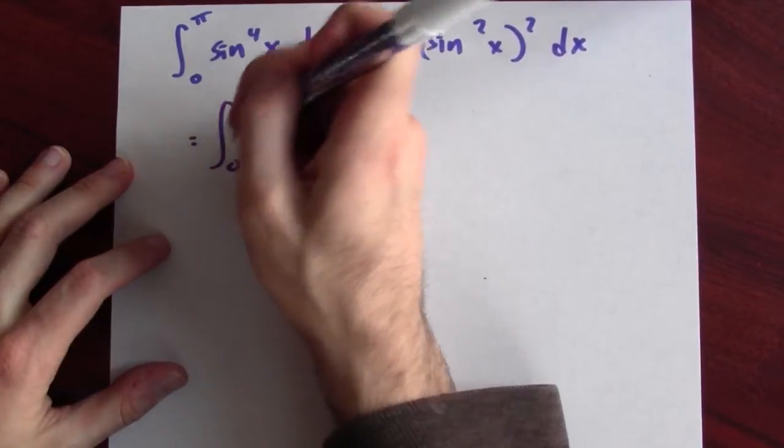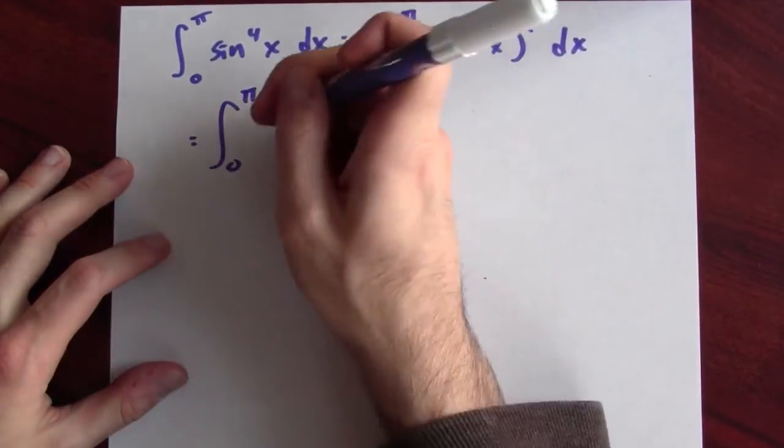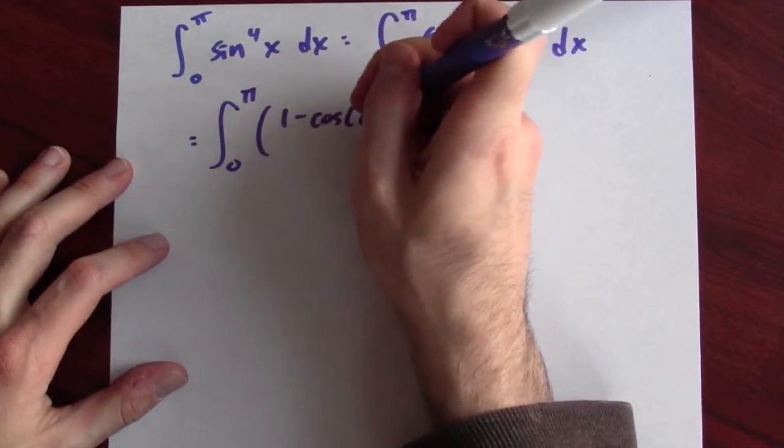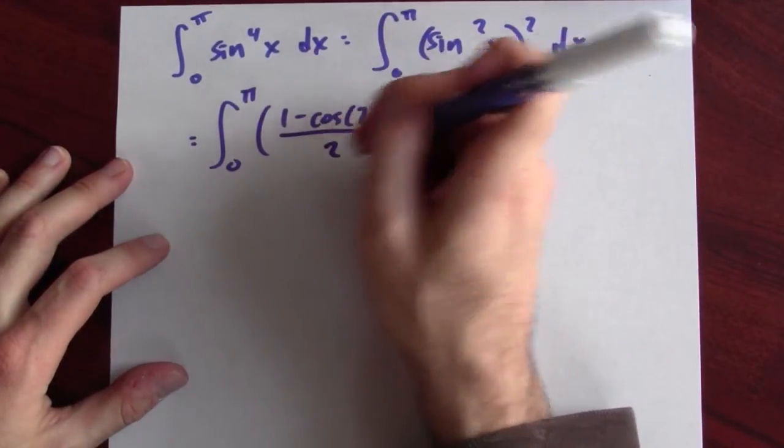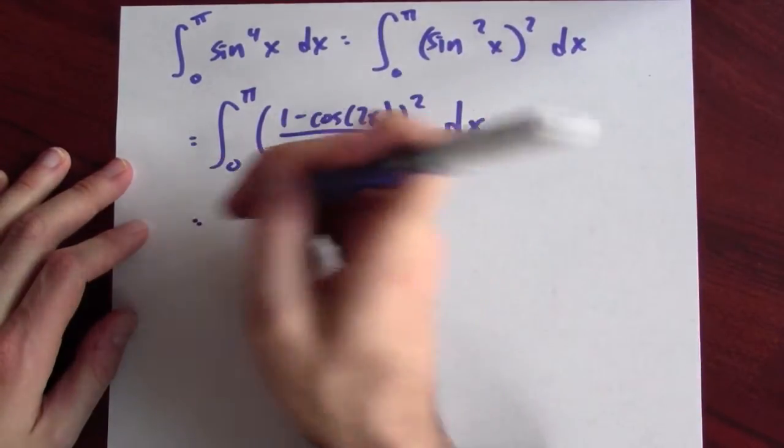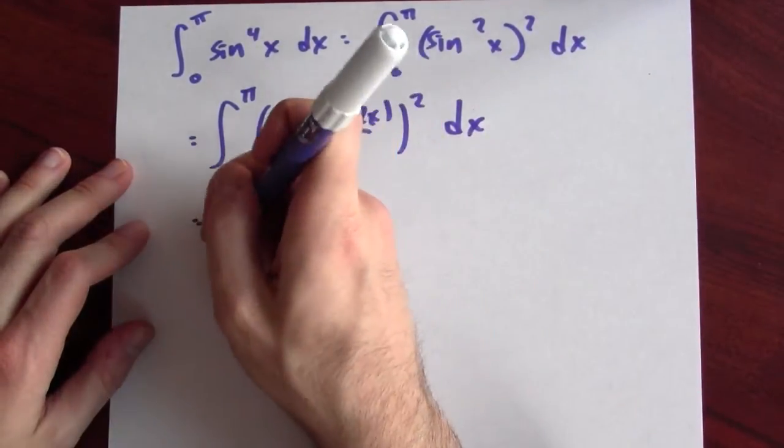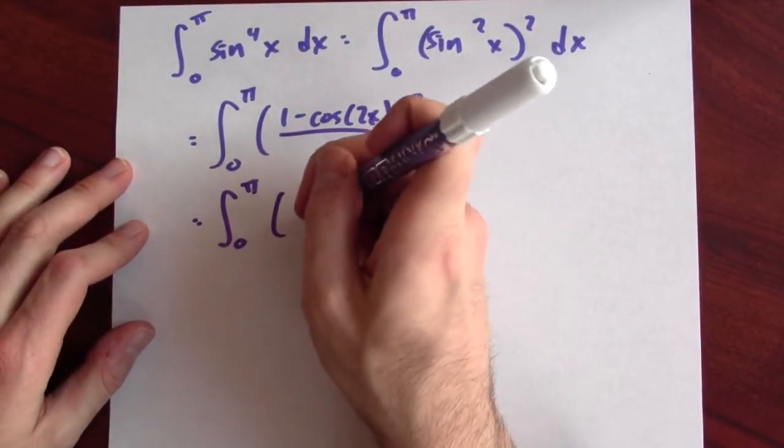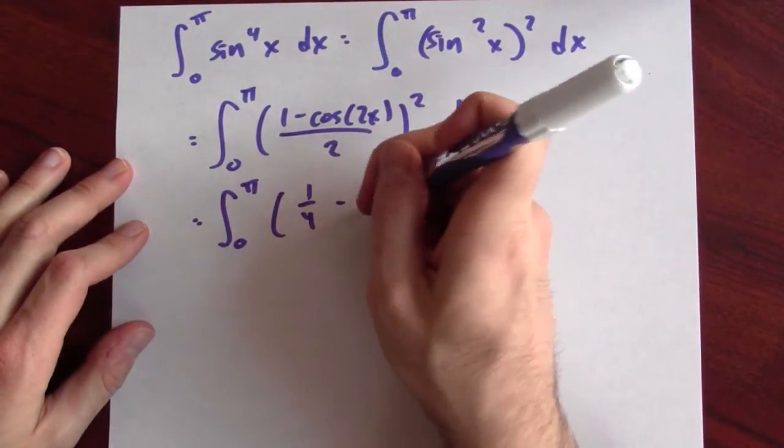Just so I can see how the half angle formula is going to help me. All right, now I'll use the half angle formula. This is the integral from 0 to pi of 1 minus cosine 2x over 2 squared. But now what do I want to do? I'll expand that out again.